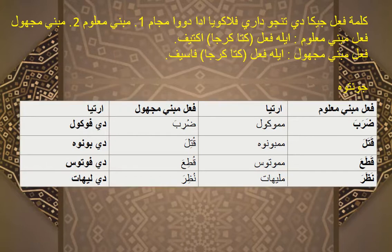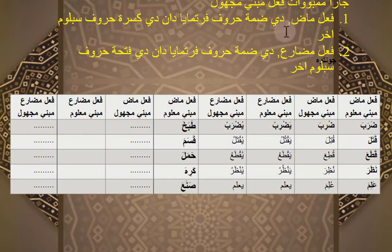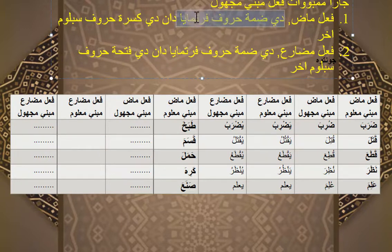Pertanyaannya sekarang, bagaimana cara membuat Mabni Majul atau Mabni Makul? Kalau Mabni Maklum itu kan sudah kita pelajari. Sekarang kita akan mempelajari bagaimana cara membuat fi'il itu menjadi Mabni Majul. Fi'il yang bisa dijadikan Mabni Majul itu ada dua: Fi'il Mazi dan Fi'il Mudhare. Kalau Fi'il Amar tidak bisa. Cara membuat Fi'il Mazi Mabni Majul: di-dhammah huruf pertamanya, dan di-kasrah huruf sebelum akhir.